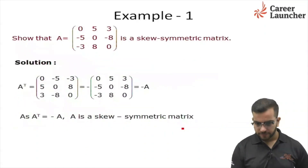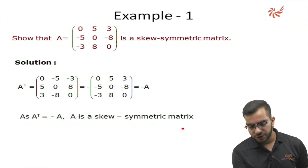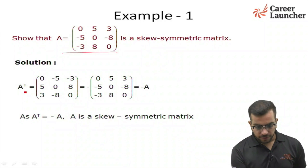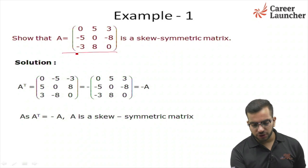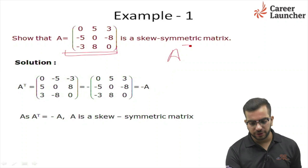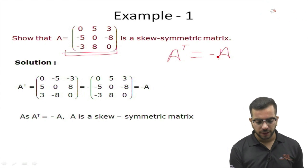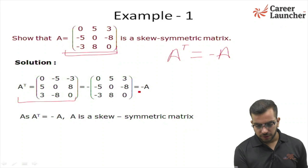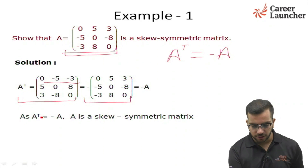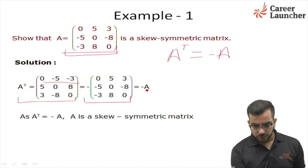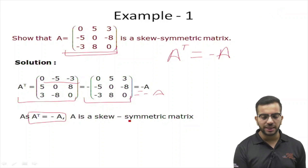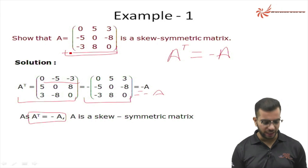Let me show an example: show that matrix A is a skew symmetric matrix. What we learned is that a skew symmetric matrix satisfies A transpose equals minus A. First, find A transpose — this comes out to be the matrix obtained by changing the rows into columns as taught before. This equals minus A, hence proving that A transpose equals minus A, which means matrix A is a skew symmetric matrix.